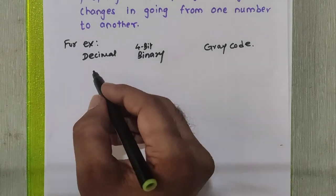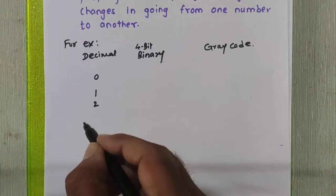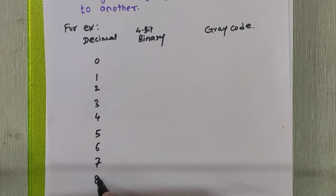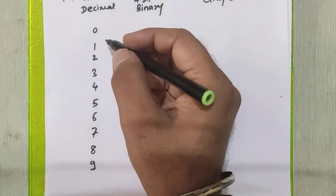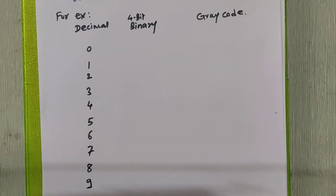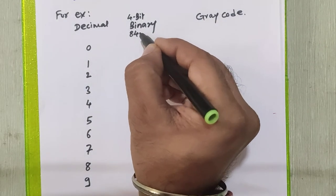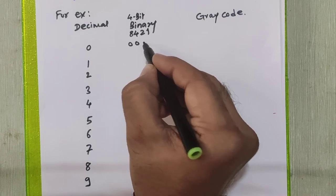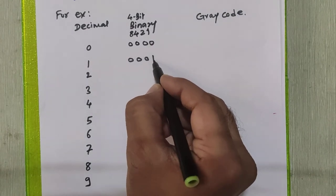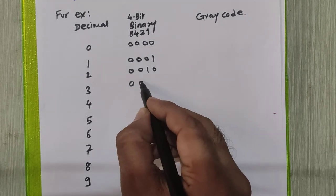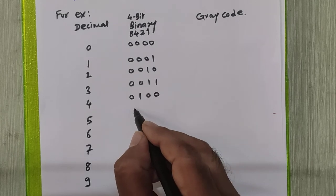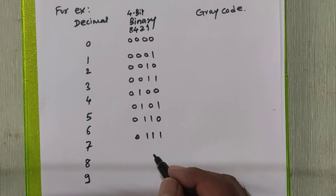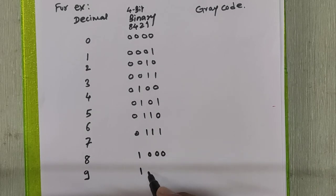We have here the decimal numbers 0 to 9. We will write the 4-bit binary equivalents using the 8421 system: 0 = 0000, 1 = 0001, 2 = 0010, 3 = 0011, 4 = 0100, 5 = 0101, 6 = 0110, 7 = 0111, 8 = 1000, 9 = 1001.